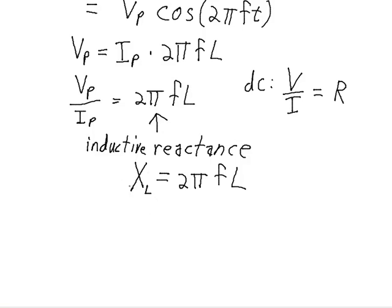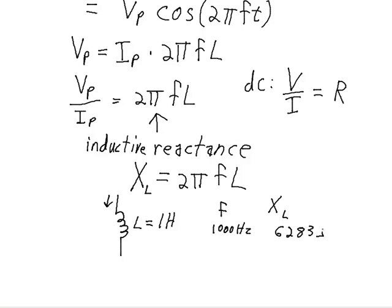To show how inductive reactance changes with frequency for the same inductor, let's say we've got an inductor with an inductance of 1 Henry, with a signal applied across it generating a current through it. If we have a frequency of 1000 Hz, we plug it into the equation and we end up with 6283 ohms — same units as resistance. Now if we boost this frequency up to 1 GHz, we get an inductive reactance of 6.283 times 10 to the 9th ohms, or 6.283 Gigaohms.